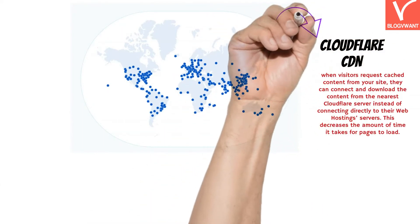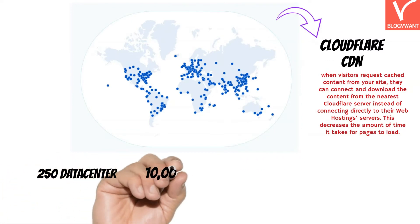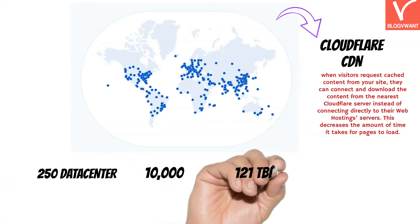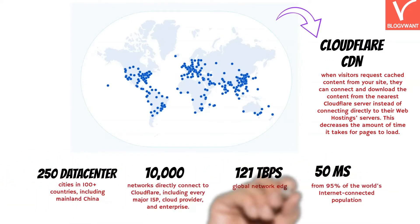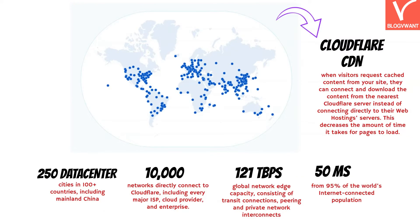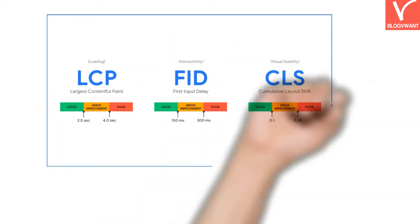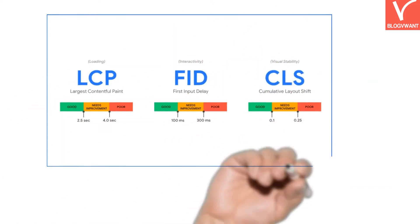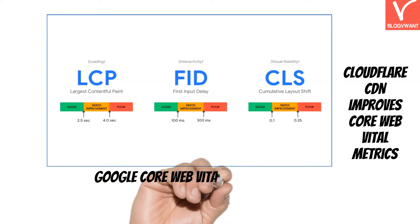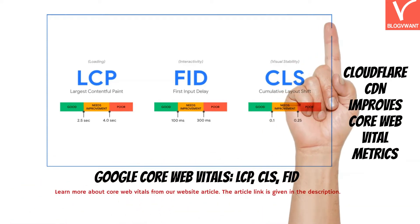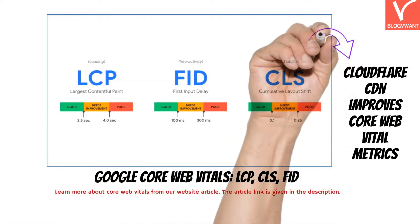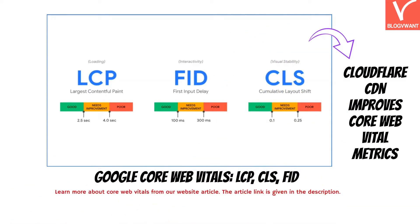Basically, Cloudflare's content delivery network is a geographically distributed group of servers that ensure fast delivery of internet content, including HTML pages, JavaScript files, style sheets, and images. By enabling a CDN, your website's core web vital metrics will definitely be improved. Core web vitals are a major factor of Google's ranking algorithm. You can learn more about core web vitals from our website article.